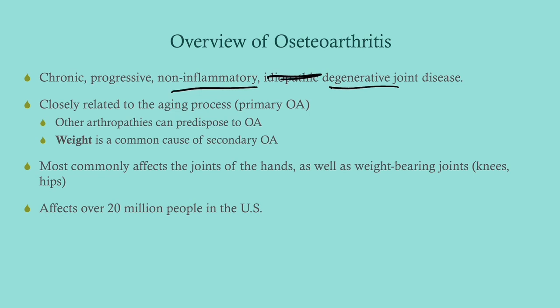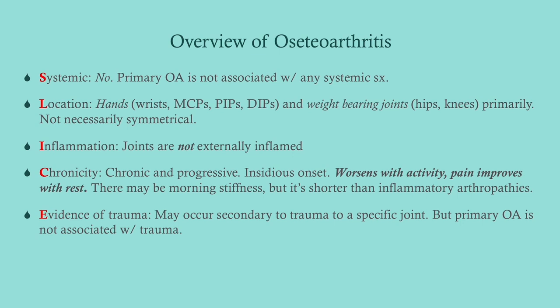The reason OA is age-related is because it's really an overuse injury over a long period of time. The joints affected tend to be the ones we use most — either stabilizing joints, weight-bearing joints, or joints we use frequently like the fingers. It most commonly affects the joints of the hands, and weight-bearing joints like the knees and hips. Interestingly, the ankles are not affected much because they are very strong joints. OA affects over 20 million people in the United States.